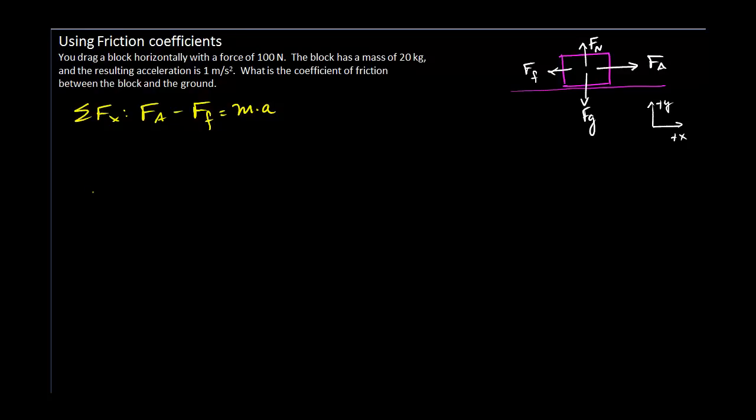And in the y direction, we can say that the normal force minus the gravitational force, in this case will equal zero, because I set up my coordinate system where all of my motion, in this case the acceleration, is in the x direction, so there is no acceleration in the y direction.